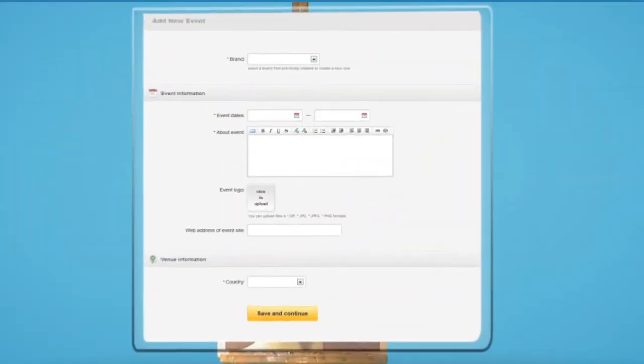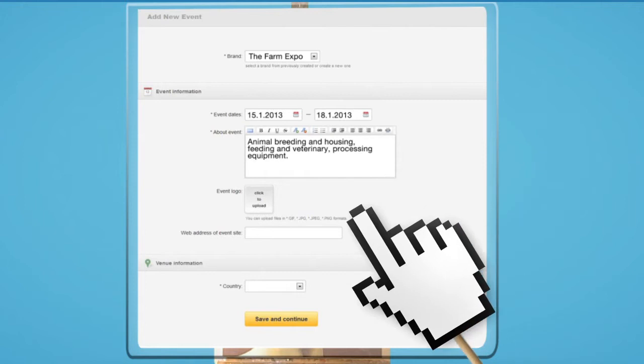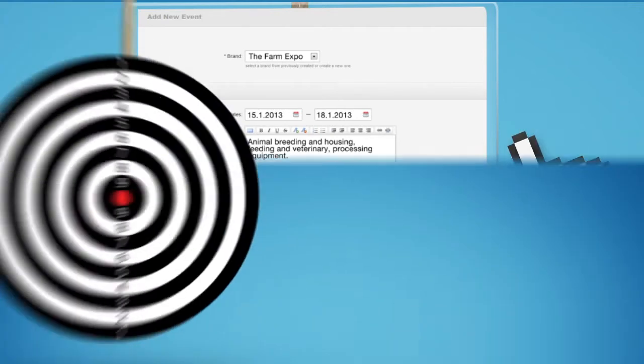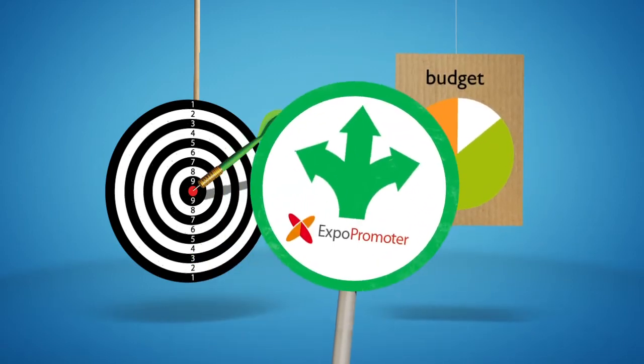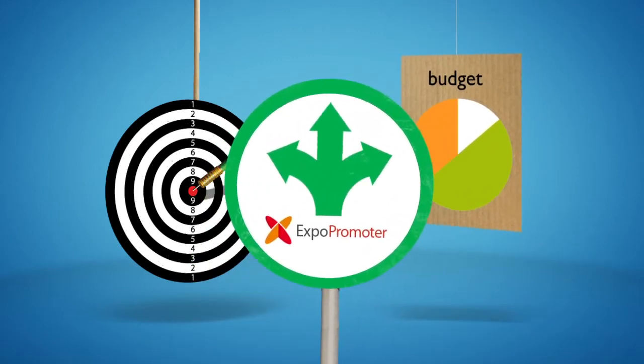Here's how it works. You fill out a short form with event details in just a few minutes. Then, depending on your event goals or budget, you choose the most appropriate way to promote your event via Expo Promoter.